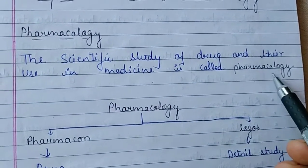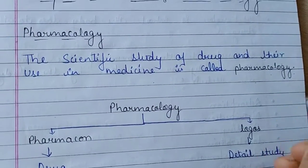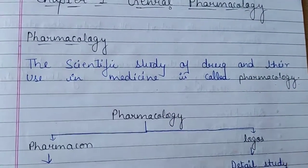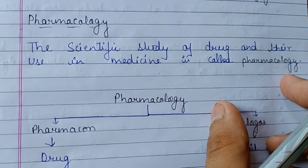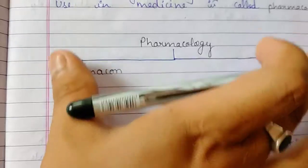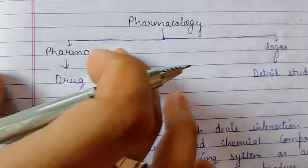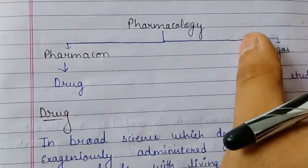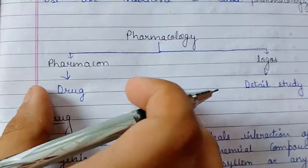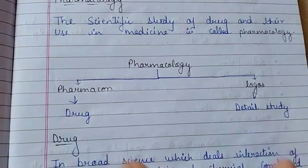Pharmacology is the scientific study of drugs used in medicine. It is derived from two Greek words: 'pharmacon' meaning drug, and 'logos' meaning detailed study. So, a detailed study of a drug is called pharmacology.